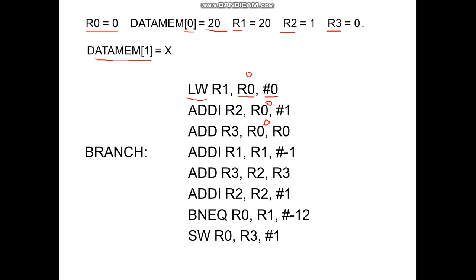So now we are going to decrement R1 to 19. We add both R2 and R3 and store it in R3, and we increment R2. This is the loop which we are going to do for 20 iterations. For the first instruction: add immediate R1, R1, hash minus 1. So R1 is decremented by 1 and it becomes 19.